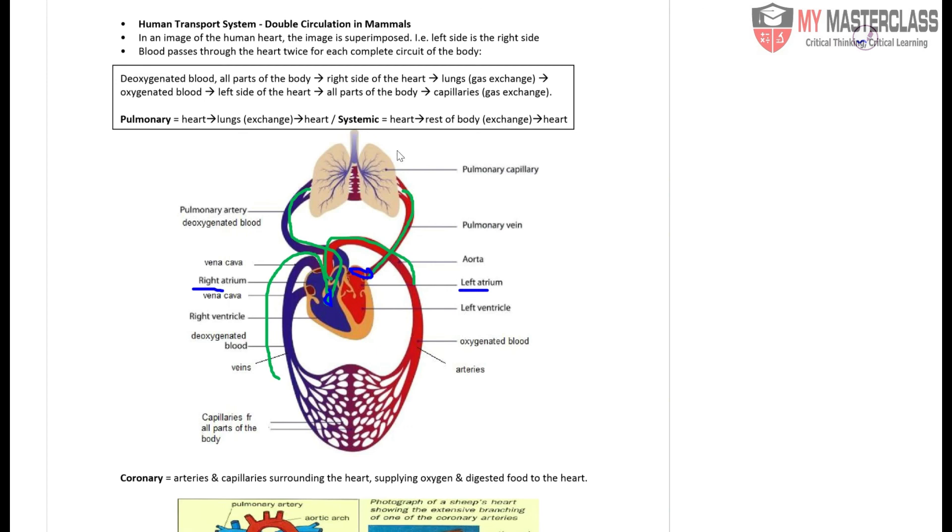The right side of the heart carries deoxygenated blood, whereas the left side of your heart carries oxygenated blood. Make sure you've got your left and right correct. Right side carries deoxygenated blood and left side carries oxygenated blood.